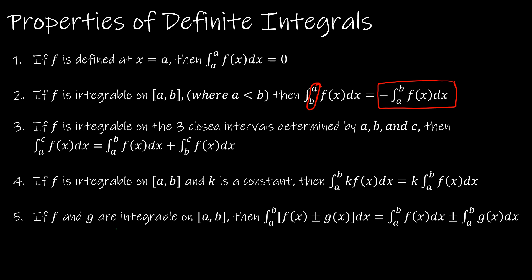For property 3, if f is integrable on the three closed intervals determined by a, b, and c, then the integral from a to c equals the integral from a to b plus the integral from b to c. So if something is split into two distinct shapes, you can find each area separately and add them. Property 4 says you can always bring a constant out to the front of an integral. And property 5 says if you're integrating two separate functions, you can split that into the integral of each separate function.